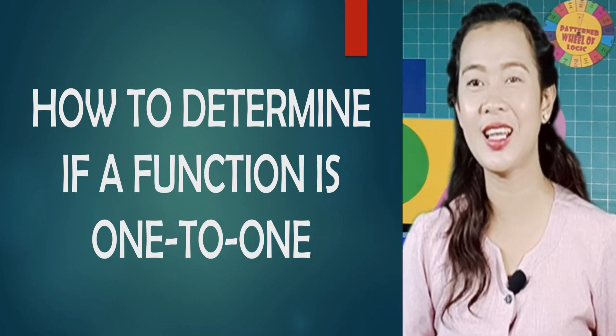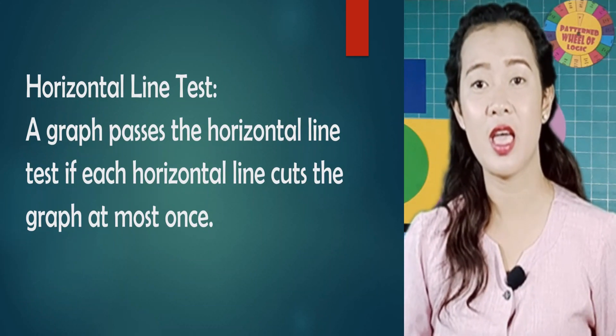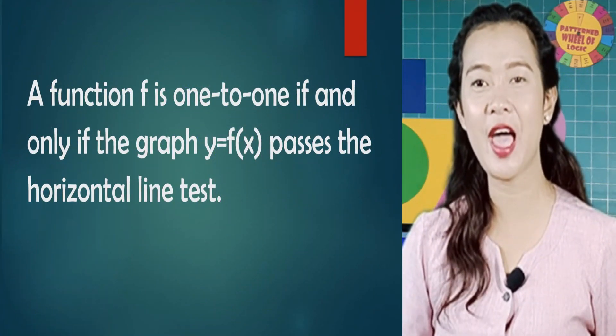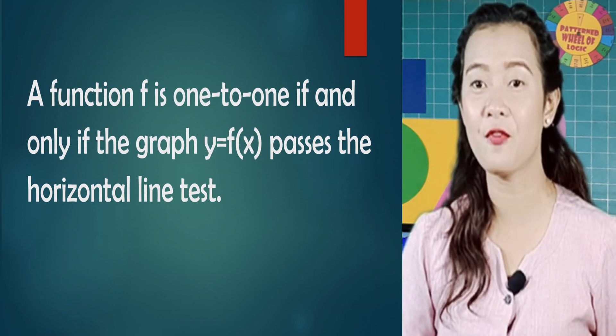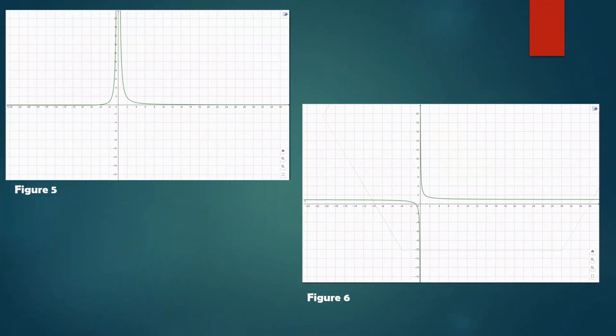How to determine if a function is one-to-one? By using the horizontal line test, wherein a graph passes the horizontal line test if each horizontal line cuts the graph at most once. The function f is one-to-one if and only if the graph y = f(x) passes the horizontal line test. Let's look at these two rational functions. Figure 5 shows that the horizontal line test intersects more than once, while Figure 6's horizontal line test intersects not more than once. It means Figure 6 is an example of a one-to-one function.